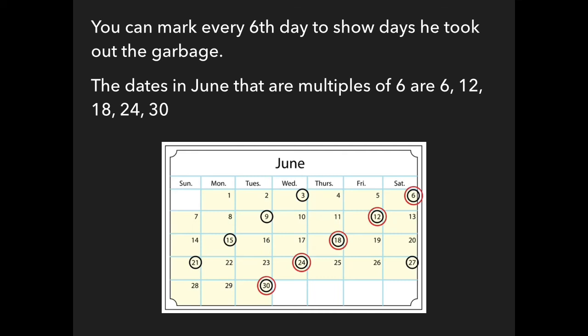You can mark every 6th day to show days he took out the garbage. The dates in June that are multiples of 6 are 6, 12, 18, 24, and 30.